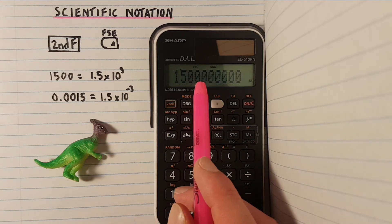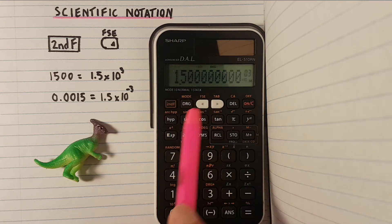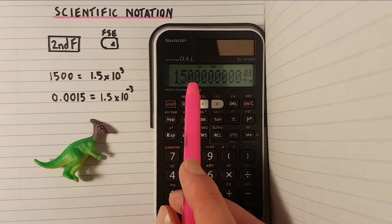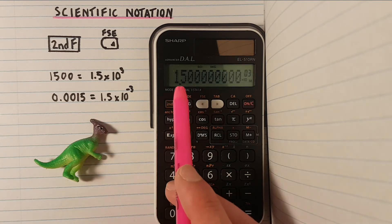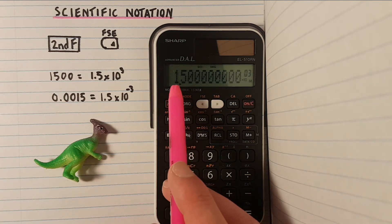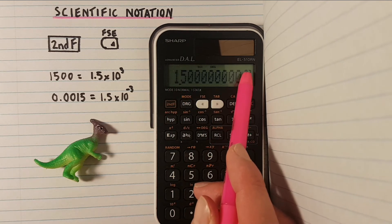This puts us into the fixed mode, and if we hit second function, left arrow again, we now see we are in scientific notation. We can see our 1500 has become 1.5 times 10 to the power of 3.